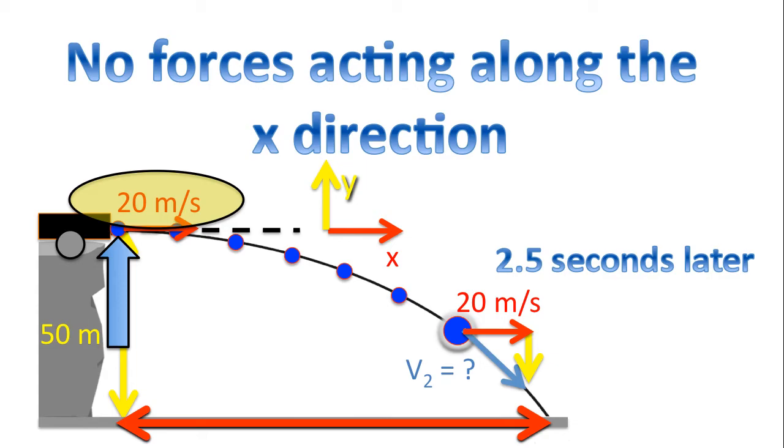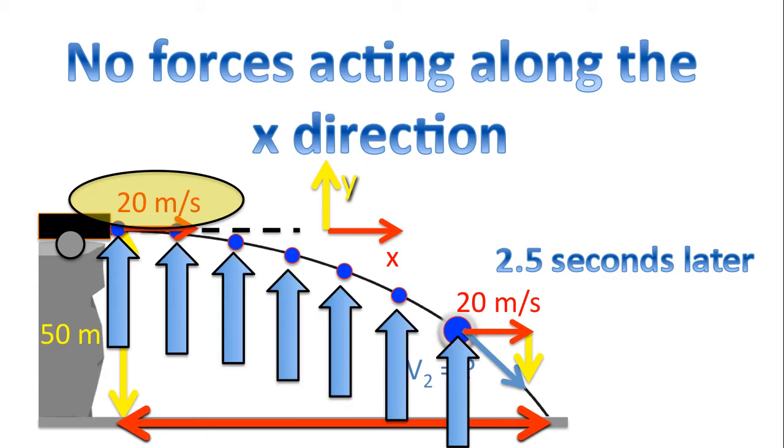So whatever velocity we start off with, in this case it was 72 kilometers an hour, or 20 meters per second, that velocity remains constant, regardless of whatever position the ball is at. It's always going to be 20 meters per second in the X direction.